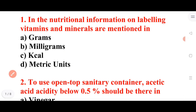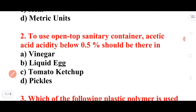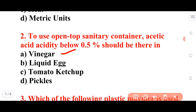Next question: To use an open top sanitary container, acetic acid acidity below 0.5% should be present in which product? Option A: vinegar. Option B: liquid egg. Option C: tomato ketchup. Option D: pickles. Answer: C is the correct answer — tomato ketchup.